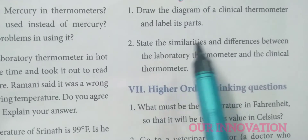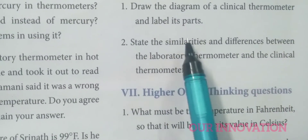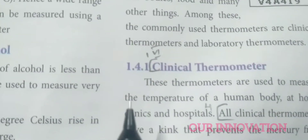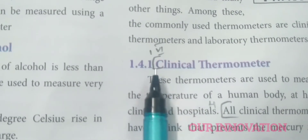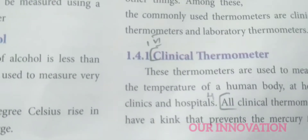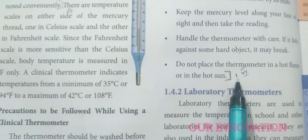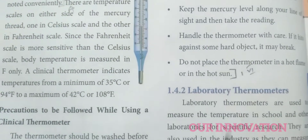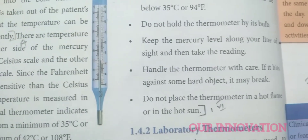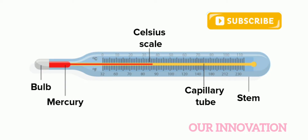Roman numeral 6, give long answer. Draw the diagram of a clinical thermometer and label its parts. The heading is 'Clinical Thermometer.' You have to write the details and precautions to be followed. You also need to draw and label the diagram. The parts to be labeled are: Celsius scale, capillary tube, stem, mercury, and bulb.